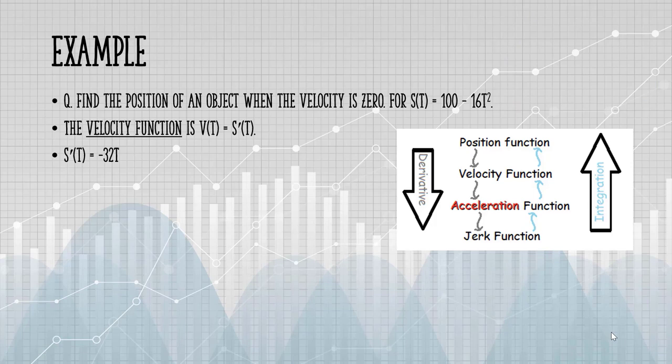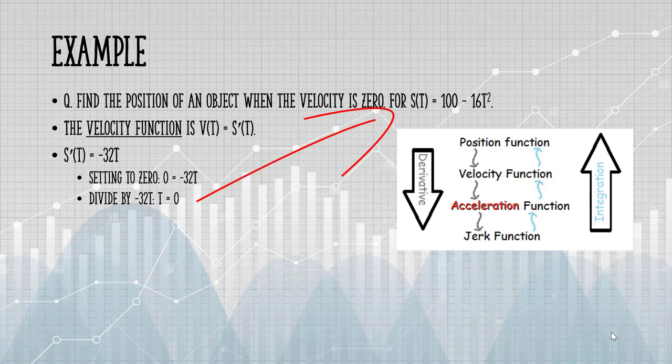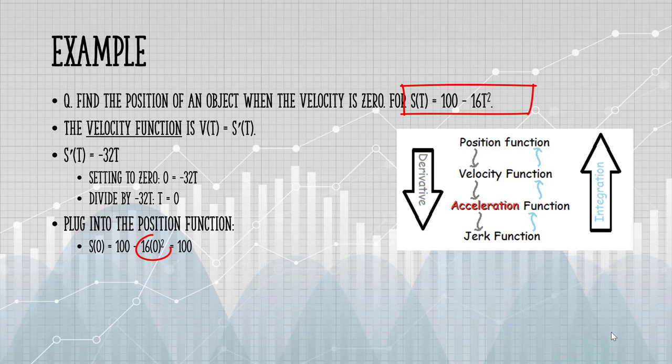I want to find when the velocity is 0, so I'm going to set the equation to 0 and solve. Dividing both sides by minus 32 leaves me with t equals 0. So the velocity is 0 when time equals 0, but I want to know the position. So I'm going to take my time of 0 and plug that into the original position function. This part of the expression becomes 0, which leaves me with 100. And that is the position of the object when the velocity is 0.